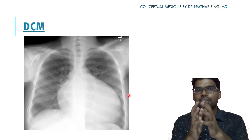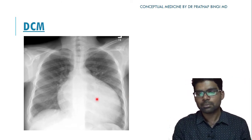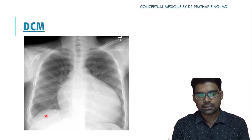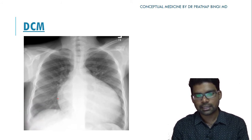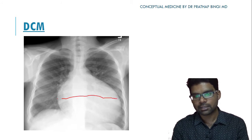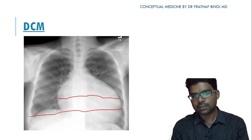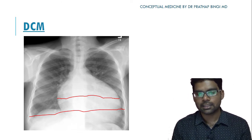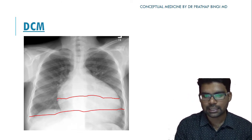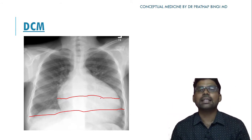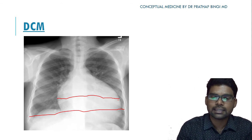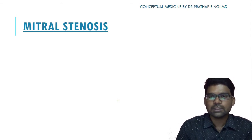Dilated cardiomyopathy shows massive cardiomegaly on X-ray. The heart shadow is greatly enlarged — the cardiac diameter to thoracic diameter ratio exceeds 70%, indicating massive dilatation of the heart.